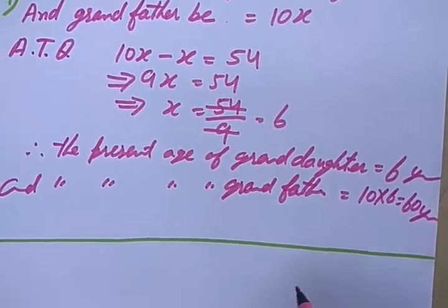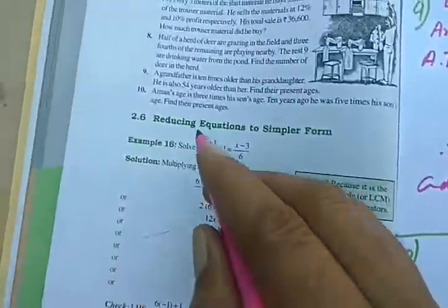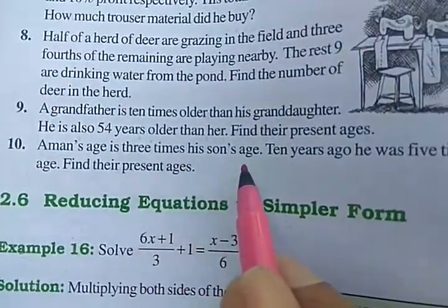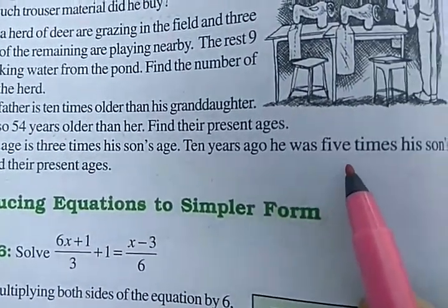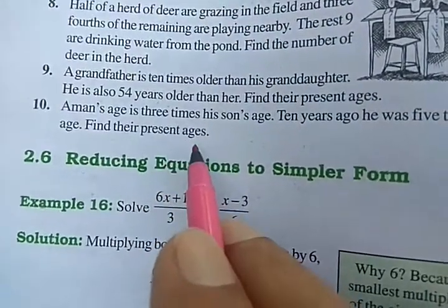Let's solve sum number 10 also. Let's read it out. Aman's age is three times his son's age. Ten years ago, he was five times his son's age. Find their present ages.